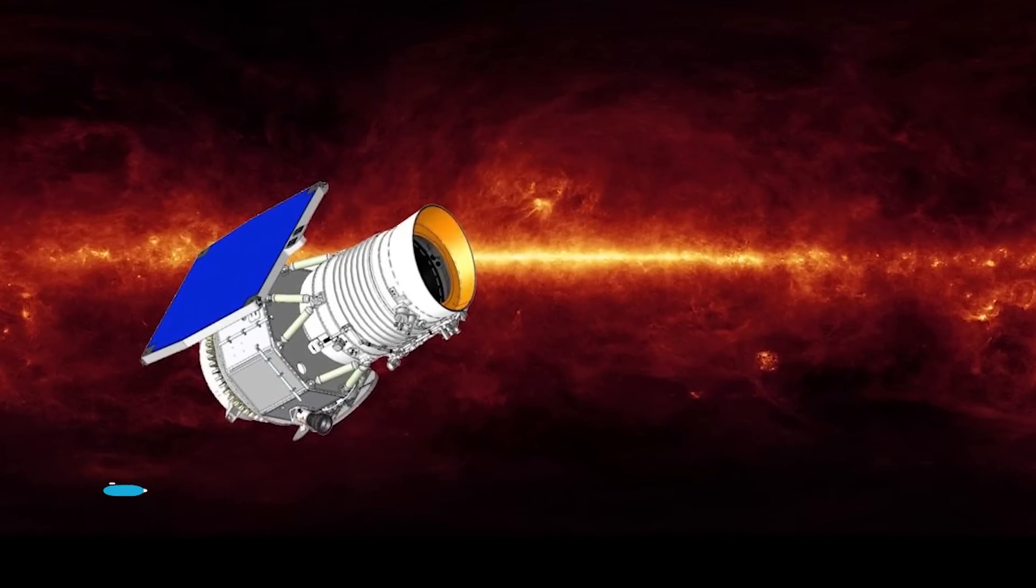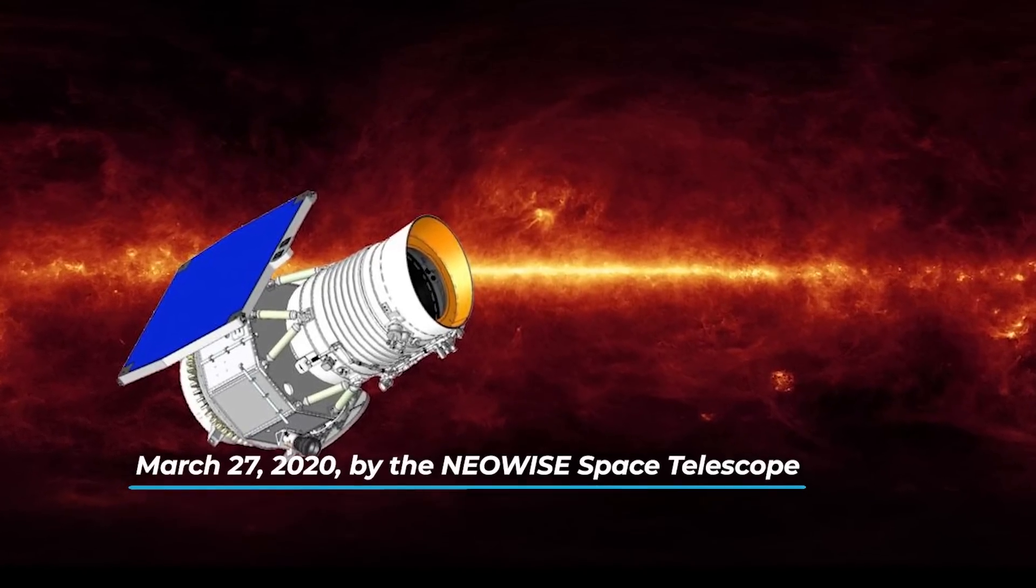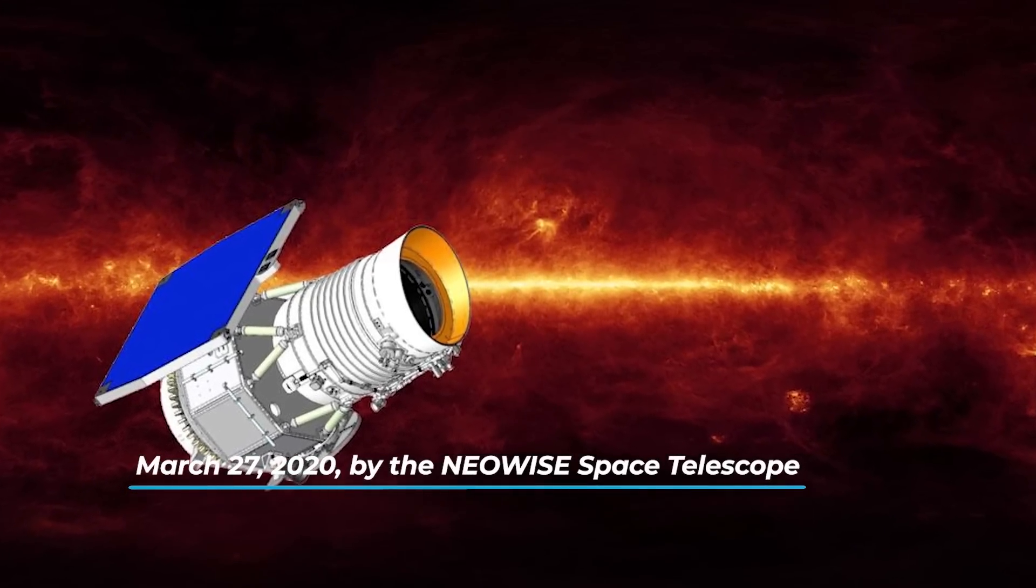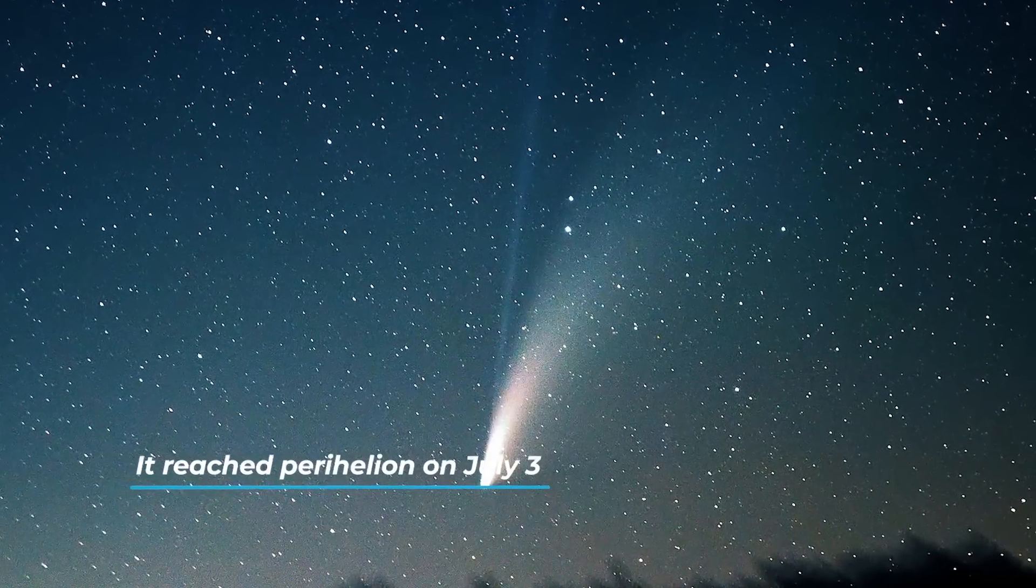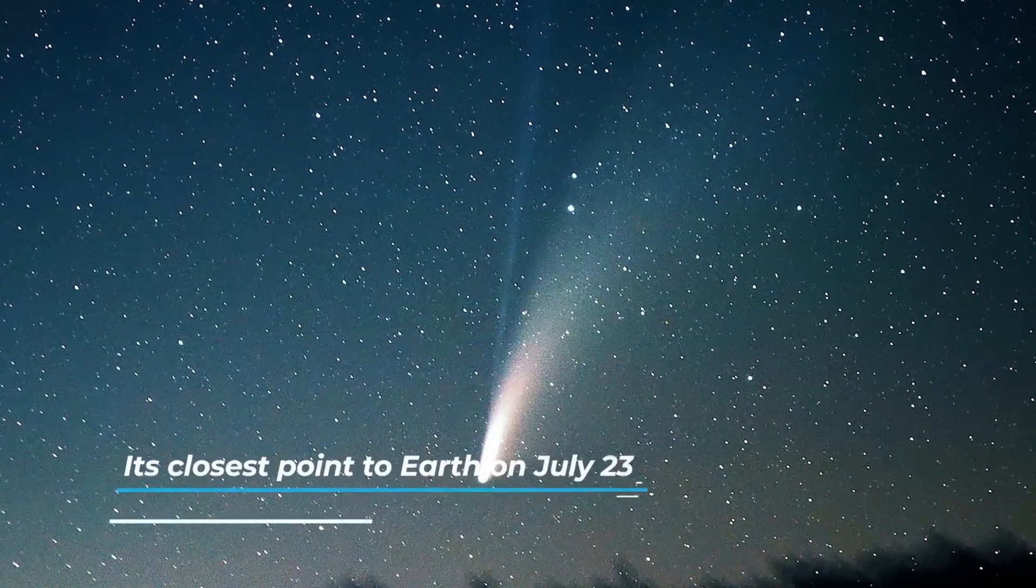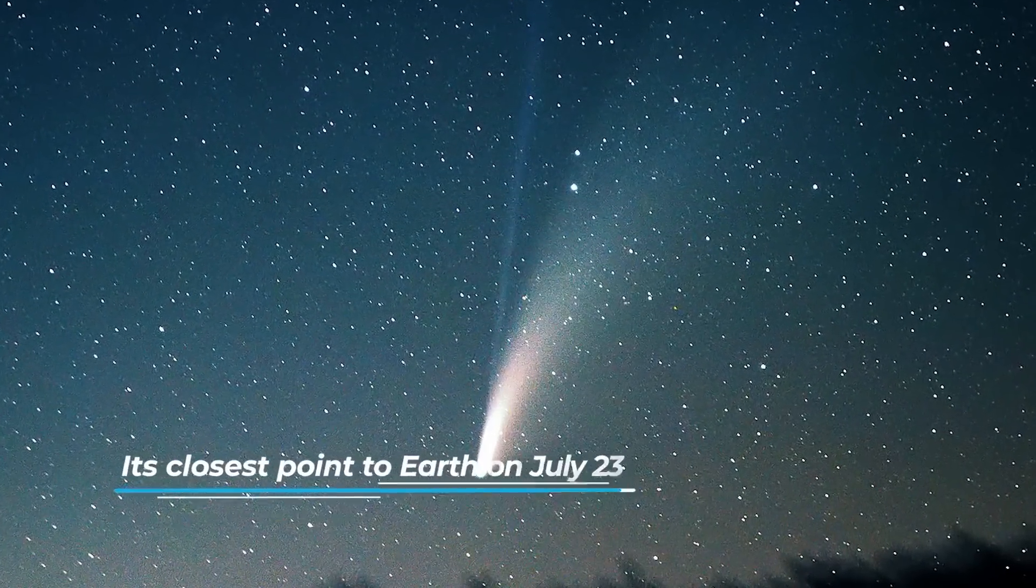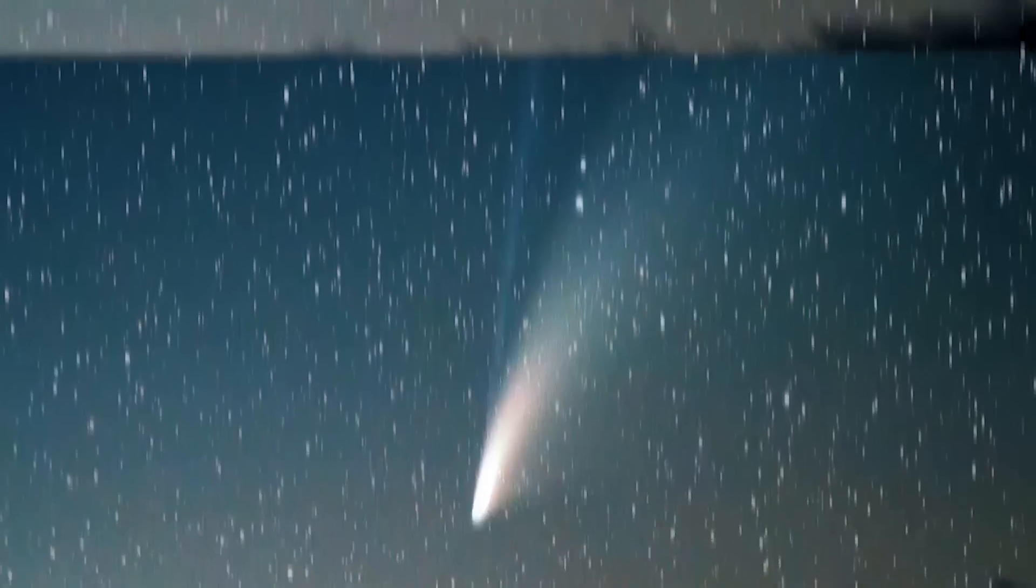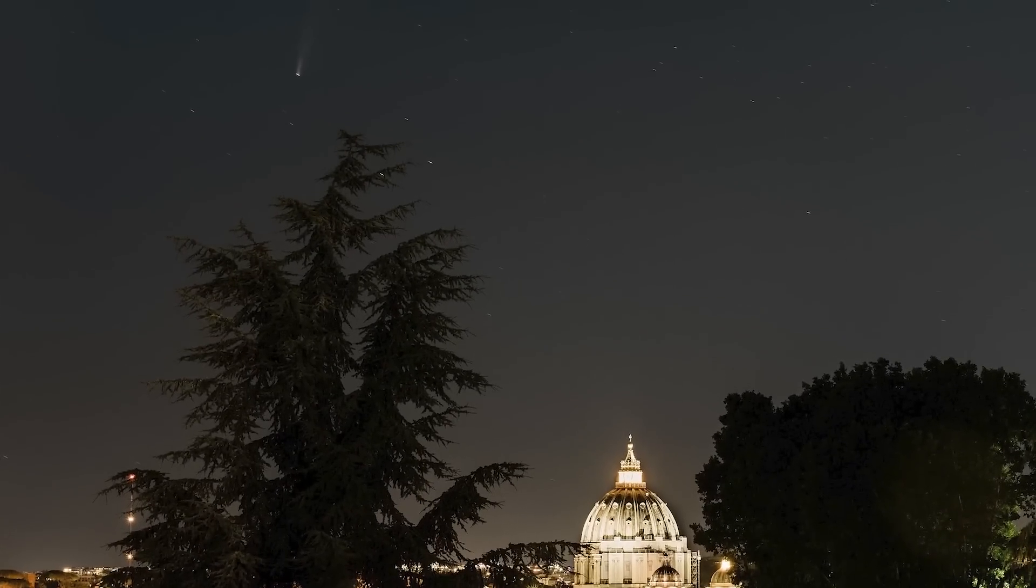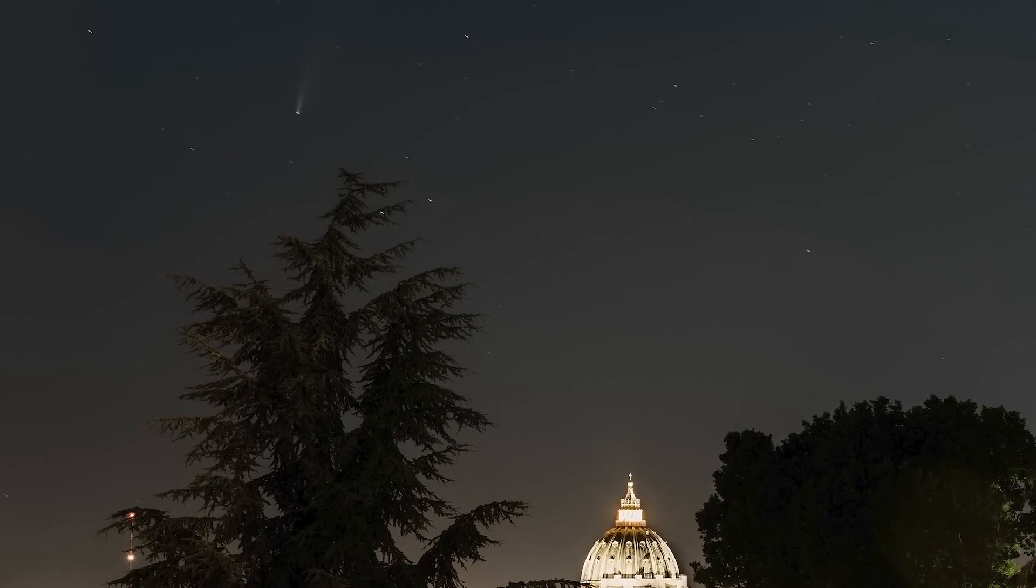It is a comet discovered on March 27, 2020 by the Neowise Space Telescope. It reached perihelion on July 3rd and its closest point to Earth on July 23rd. A lot of people went out to take a look at that amazing comet. Here are some photos of the Neowise comet. Amazing, huh?